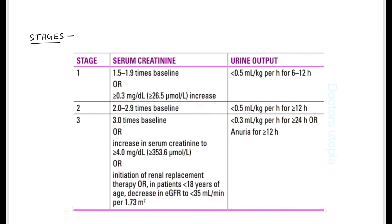You may know that chronic kidney disease has five stages according to the GFR, but in AKI we have three stages depending on serum creatinine and urine output. Stage 1 is 1.5 to 1.9 times baseline creatinine and urine output less than 0.5 ml per kg per hour for more than six but less than 12 hours. Stage 2 is 2 to 2.9 times baseline creatinine and urine output less than 0.5 ml per kg per hour for more than 12 hours.